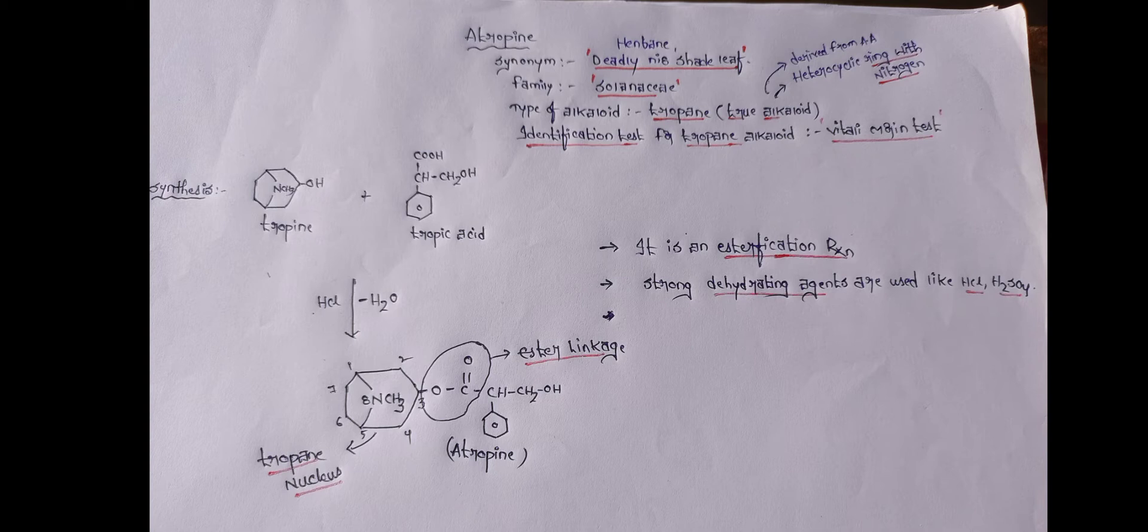General introduction of atropine. Atropine is obtained from Atropa belladonna, belongs to the family Solanaceae. Synonyms of atropine: henbane, deadly nightshade leaf. Type of alkaloid: tropane alkaloids.